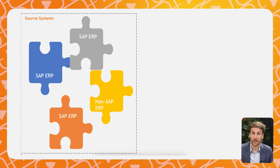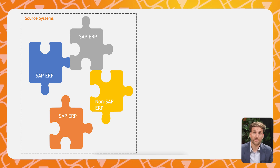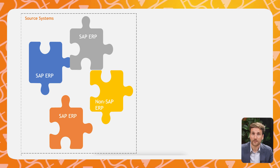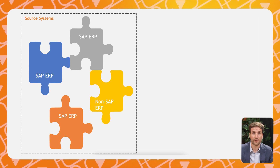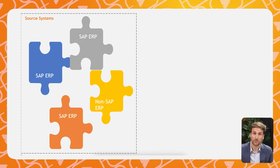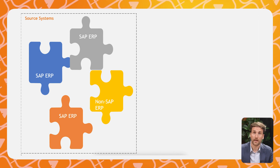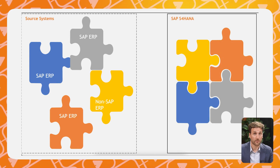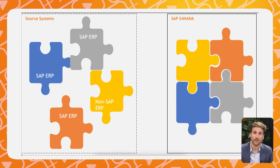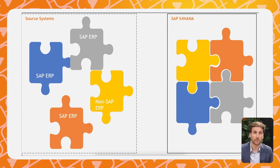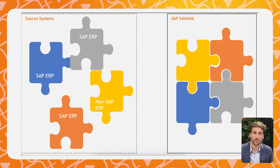Now let's find out how central finance works. Let's visualize the scattered landscape of financial systems as a big puzzle made up of many pieces, all laying around in your different source systems. When deploying S/4HANA through central finance, you want to rearrange those pieces to make a new, better picture in your target S/4HANA system. SAP Landscape Transformation Server — in short, SLT — is the tool that helps you do that with data from your different SAP and non-SAP systems.